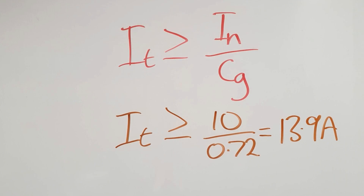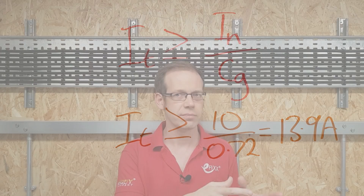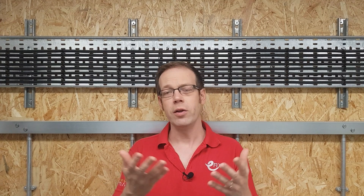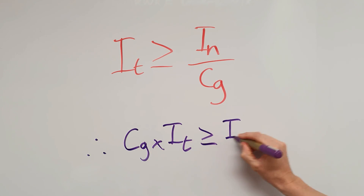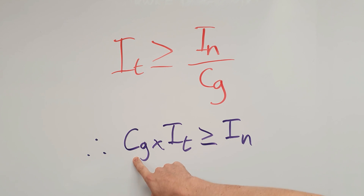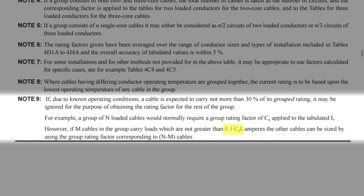So let's try and unravel that. The note is telling us that the grouping factor needs to be applied to the tabulated current carrying capacity of the cable, but earlier we applied the grouping factor to the nominal rating of the protective device — so what's going on? Well, looking back to our formula, if we transpose it we'll find that the current carrying capacity multiplied by our grouping factor must be greater than the nominal rating of the protective device. So if the grouping factor times the tabulated current carrying capacity times 0.3 is higher than the current expected to flow, then you don't need to count that cable in your grouping calculation.